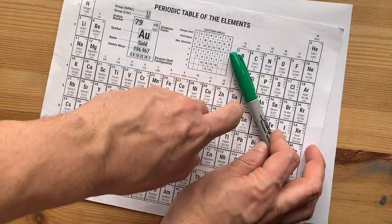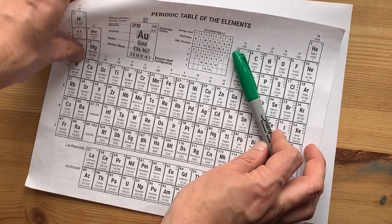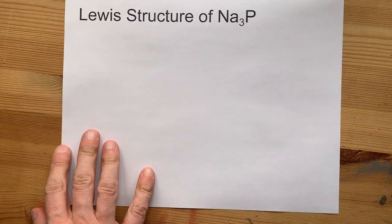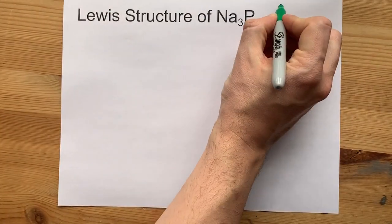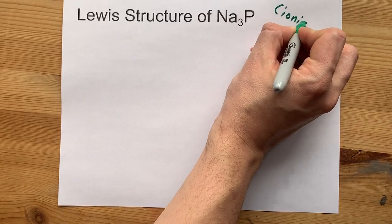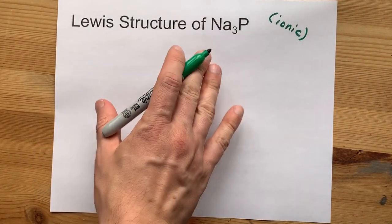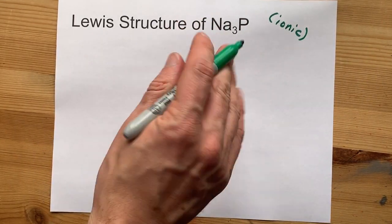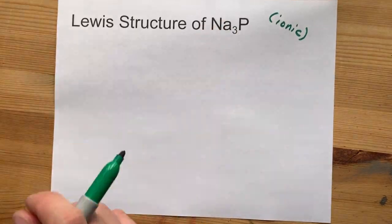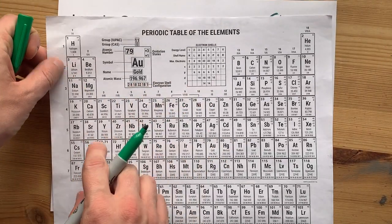And phosphorus is a non-metal because it comes from the right-hand side of the staircase. When metals and non-metals get together, they form ionic compounds. The metals give their electrons away to the non-metals. I'll show you exactly what I mean in just a second.